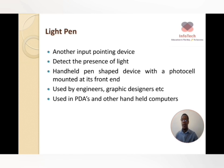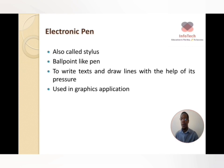A light pen is an input device used to detect the presence of light. It is a handheld, pen-shaped device with a photo cell mounted on its front end, and is used by engineers, graphic designers, and so on. The electronic pen, also called a stylus, is normally found with phones or handheld computer devices. It has a ballpoint-like tip and is used to write text and draw lines using pressure, typically in graphics applications or on mobile phones and handheld laptops.